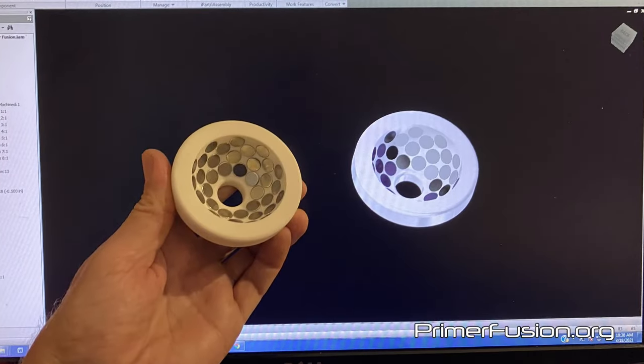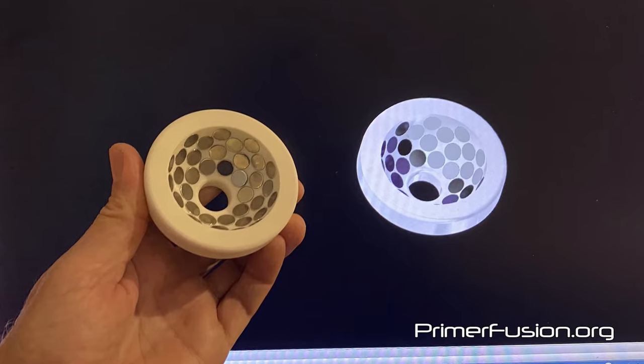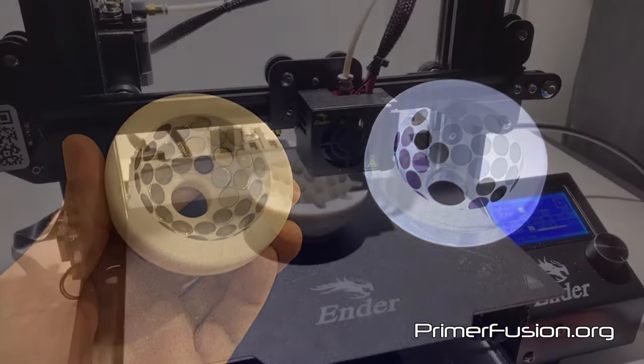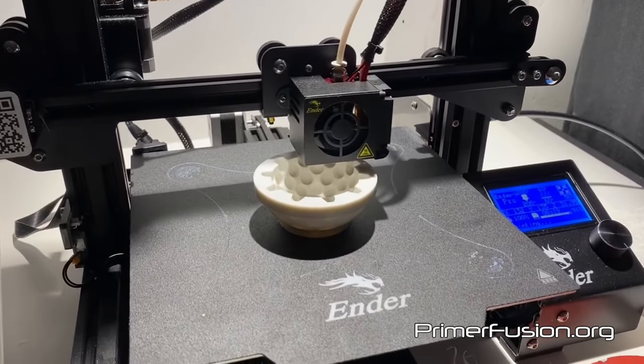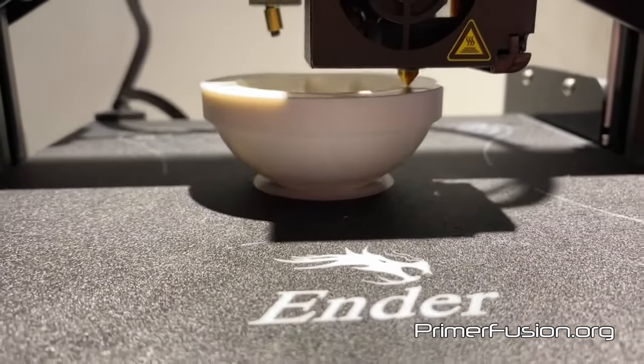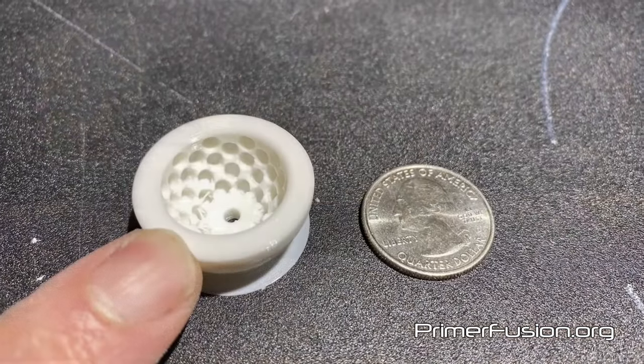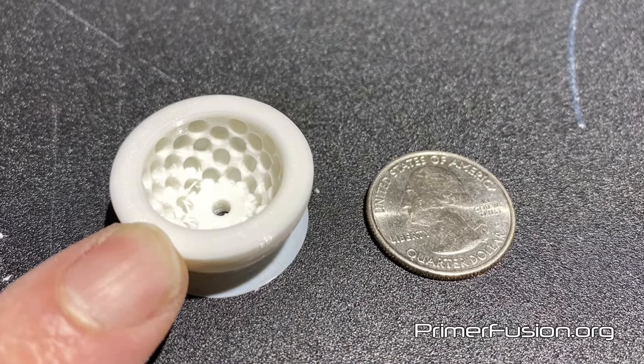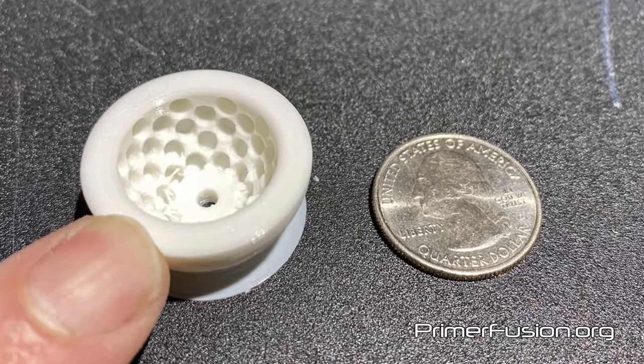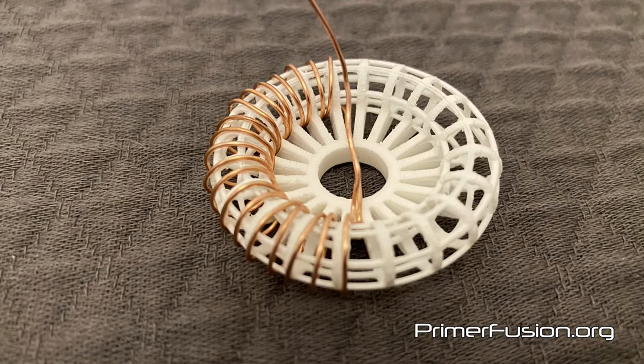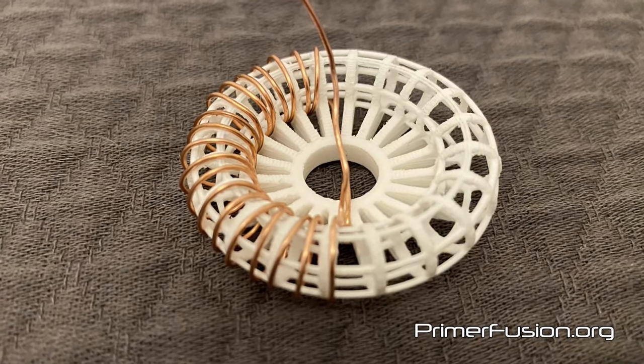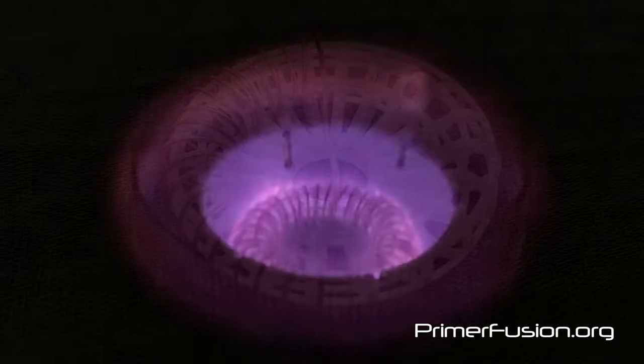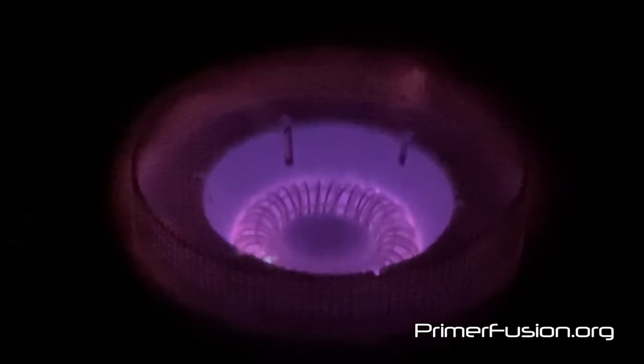But by using this approach, I was often able to design a component, produce it on my 3D printer, and run it in my vacuum chamber in 24 hours or less. This method enabled me to improve the Primerfusion reactor's design much more rapidly than I could have otherwise, even though I knew it meant that parts would melt after a short period of testing.